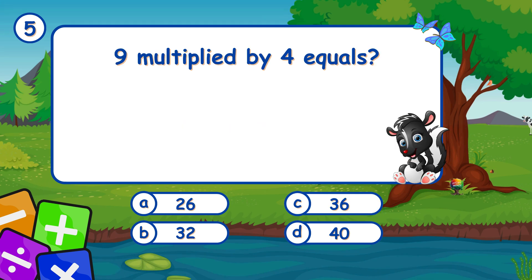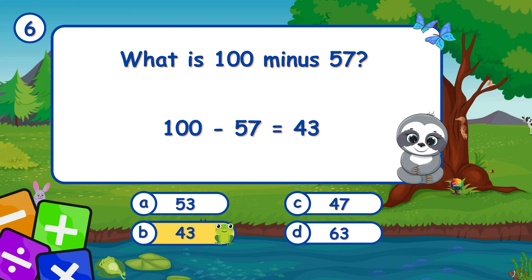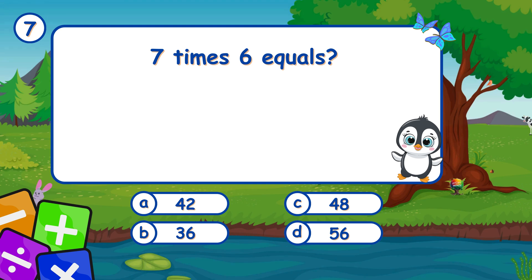9 multiplied by 4 equals... It's C, 36. 9 times 4 is 36. What is 100 minus 57? It's B, 43. Subtracting 57 from 100 gives 43. 7 times 6 equals...